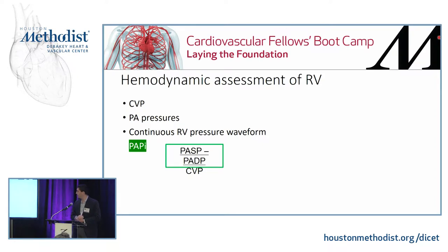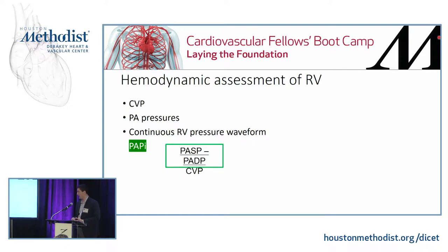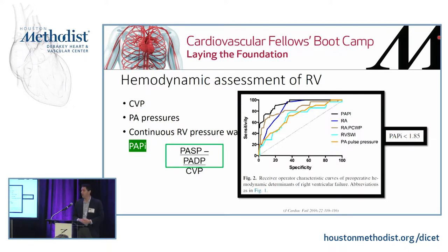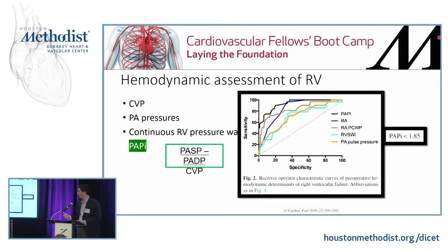The last hemodynamic variable is the PAPI — pulmonary artery pulsatility index. It's simply PA pulse pressure (PA systolic minus diastolic) divided by the CVP. This equation was first described as a way to assess RV function specifically around 2012. It's been studied several times, particularly in the LVAD population. Using a cutoff of PAPI less than 1.85 was the most sensitive and specific among all variables for predicting RV failure. If you have a PA catheter in place, it's super simple to calculate and turns out to be incredibly accurate.